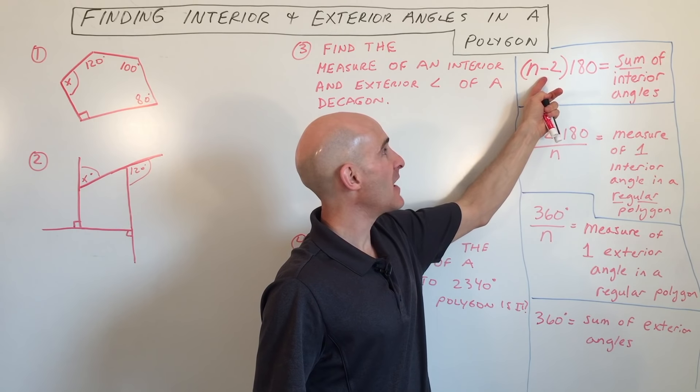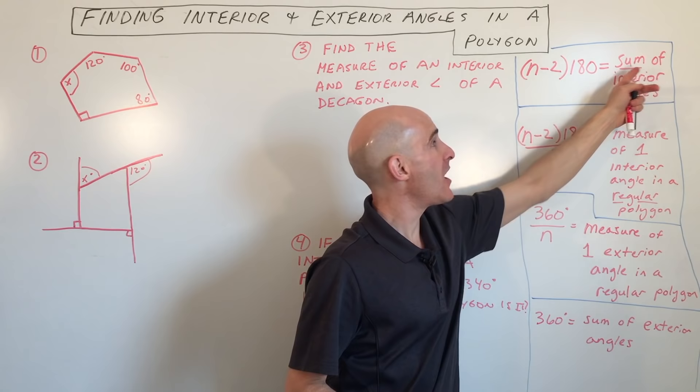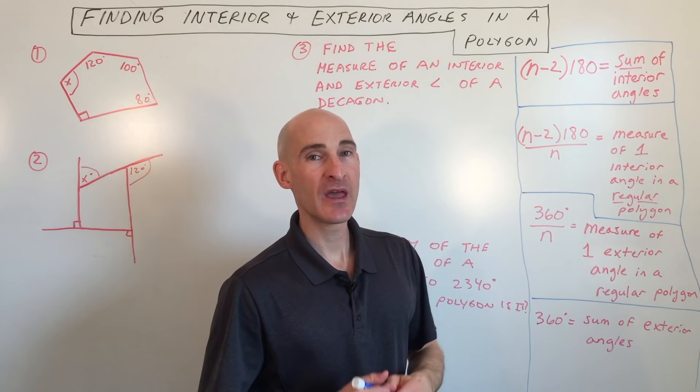The first one is n minus 2 times 180. This equals the sum of the interior angles in a polygon. So all the interior angles added up. I just want to show you quickly where that comes from.